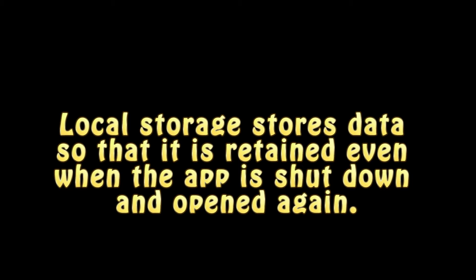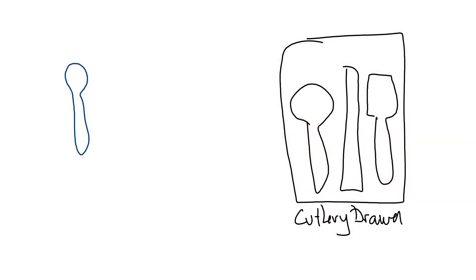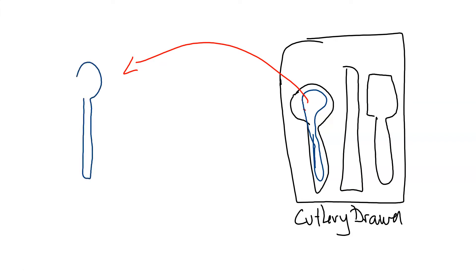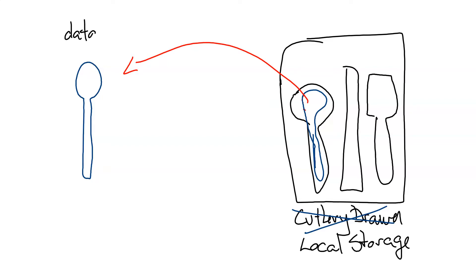Let's consider a metaphor. If I'm unloading the dishwasher and I pull out a spoon and want to store it, I hand it to you and say put this spoon in the spoon slot in the cutlery drawer. You take the spoon and put it in the spoon slot. Local storage is kind of like that — I have data which are the spoons, local storage which is the cutlery drawer, and the spoon slot which is the key used by local storage to identify some data.